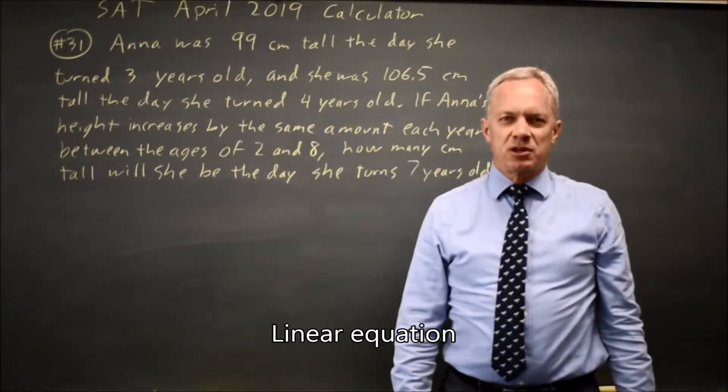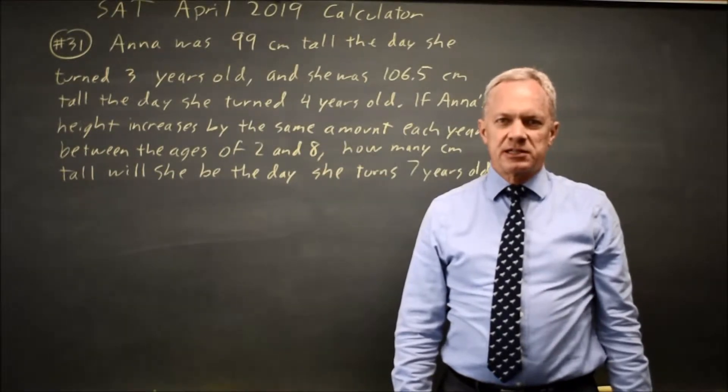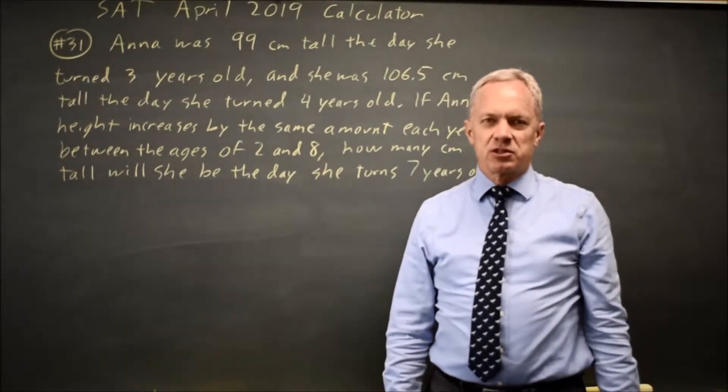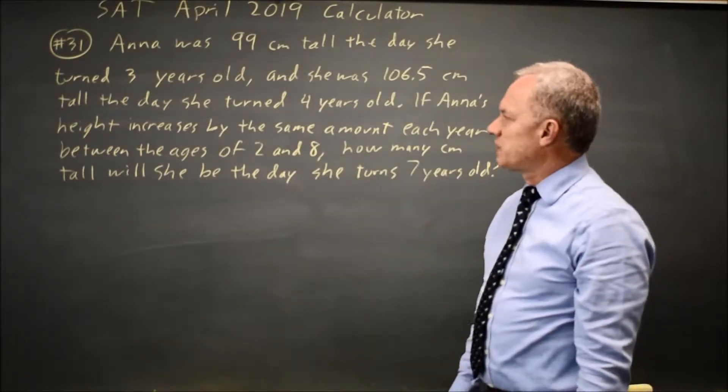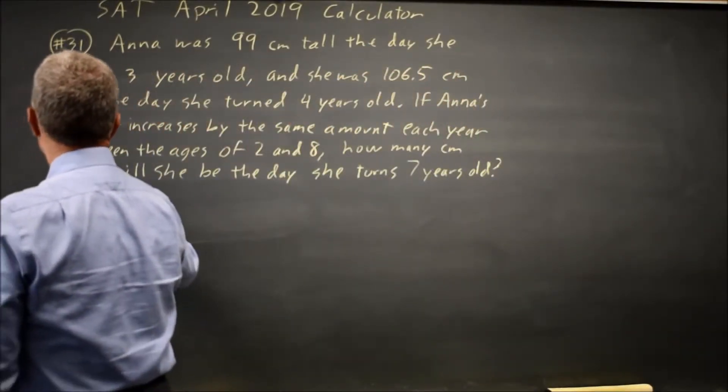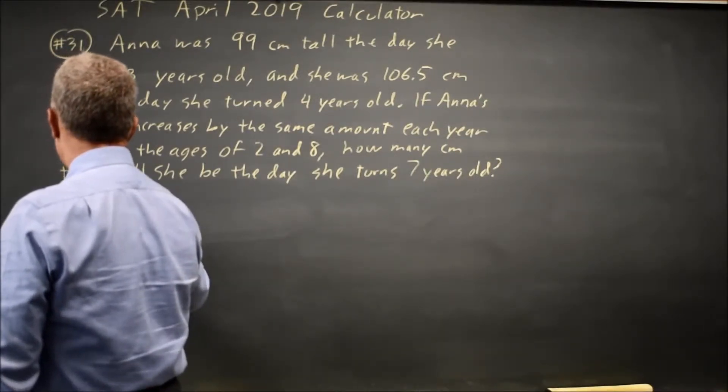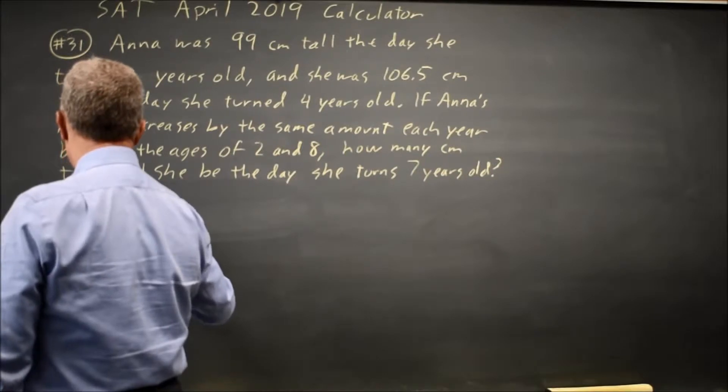This is calculator question number 31 from the April 2019 SAT. We're given the description of Anna's height. Anna was 99 centimeters tall the day she turned 3 years old, and 106.5 centimeters the day she turned 4. So she grew 106.5 minus 99 equals 7.5 centimeters per year.